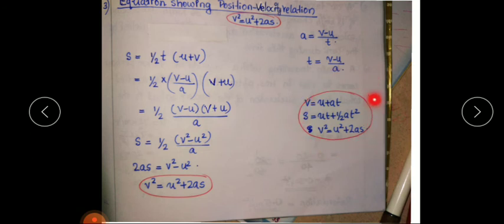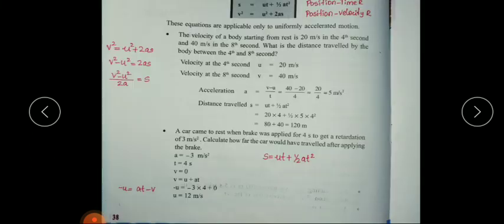The three equations of motion are: V = U + AT; S = UT + ½AT²; and V² = U² + 2AS. You can also see these three equations in your textbook. Some questions are given — you have to solve them based on the equations of motion.